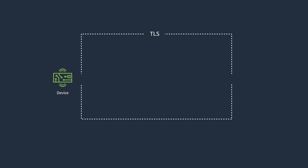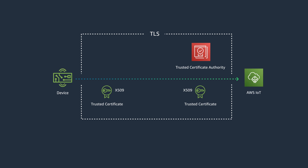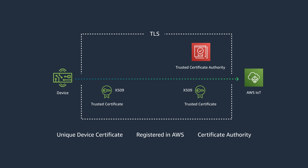Devices in this stage must receive a trusted certificate that is also signed by a trusted certificate authority that is then registered with AWS. A secure connection with TLS has three requirements: a unique device certificate on the IoT device, the certificate registered in AWS, and a certificate authority trusted by both sides.